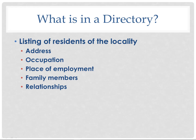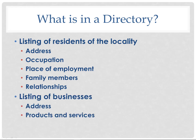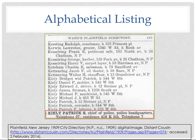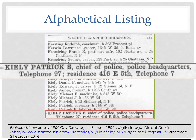What's in a directory? Obviously there's a listing of residents and their addresses. Historical directories also give occupation and frequently place of employment. Sometimes they'll list family members and even give an indication of relationships. Here's an example from Plainfield, New Jersey in 1909 — Patrick S. Keeley, chief of police, with his work address at police headquarters, telephone number at work, and his home address and home telephone number. Quite a lot of information, certainly more than you'd find in a current white pages.